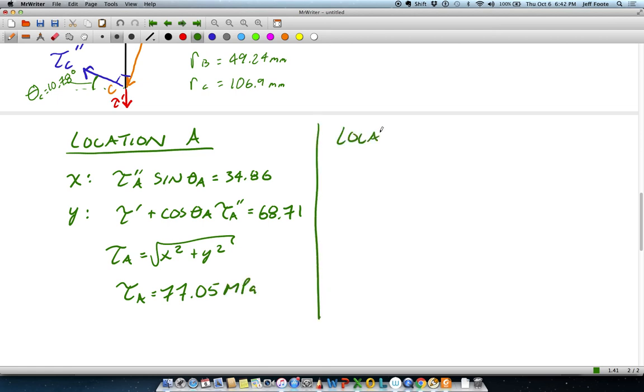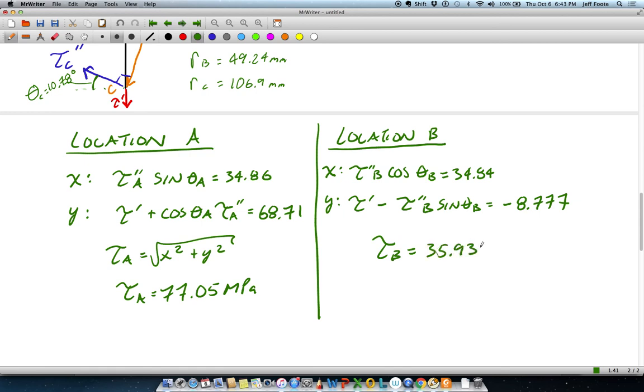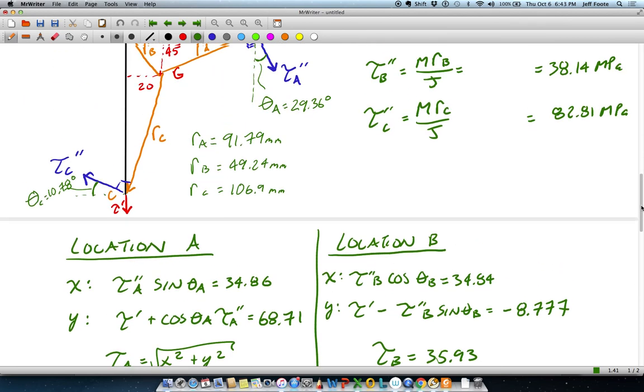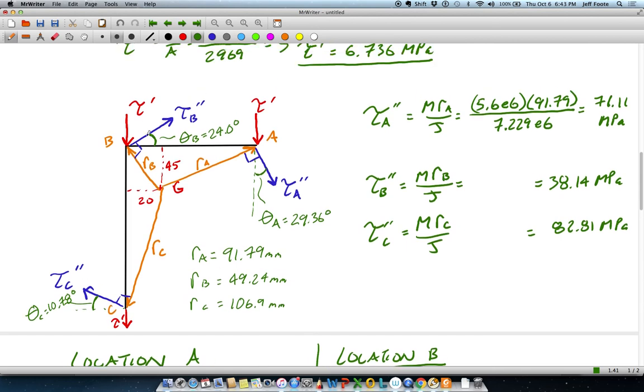At location B, same basic thing. X here is going to be Tau double prime B times the cosine of theta B, which is 34.84. Y components will have Tau prime minus Tau double prime B sine theta B, which is equal to a negative 8.777. Tau B, the magnitude here is again going to be the root sum square of those two values, and we'll get 35.93. And the minus there is just if we look at those two vectors, they're going in opposite directions, so they are going to be subtractive.